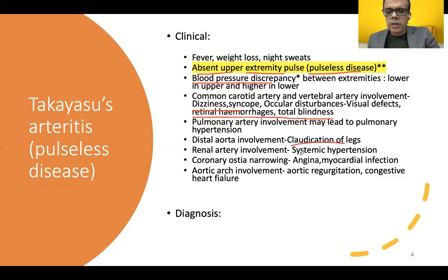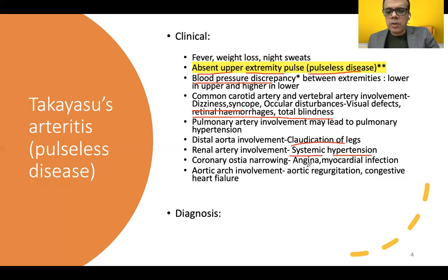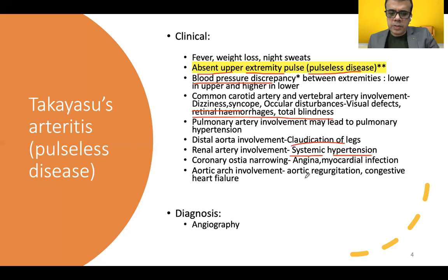Renal artery involvement gives rise to systemic hypertension in many patients. Coronary ostial narrowing can significantly give rise to angina and myocardial infarction. Aortic arch involvement leads to aortic regurgitation, and even congestive cardiac failure may be seen in many patients.